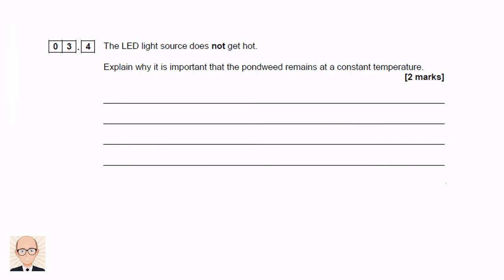Next, we're told that the LED lamp does not get hot. LED lamps are very efficient and so waste very little energy in heating the surroundings. We're then asked why a constant temperature is important. We know from chemistry that reaction rates are dependent on temperature. The higher the temperature, the faster the reactions. So any change in temperature will change the rate of photosynthesis, and we wouldn't be able to tell if the rate was being affected by the light intensity.